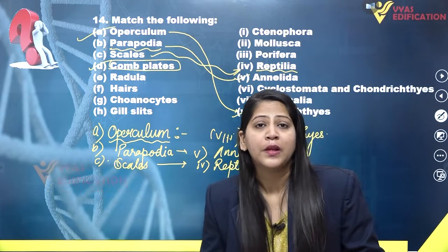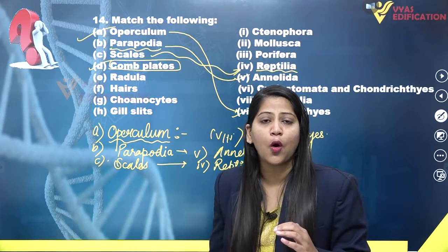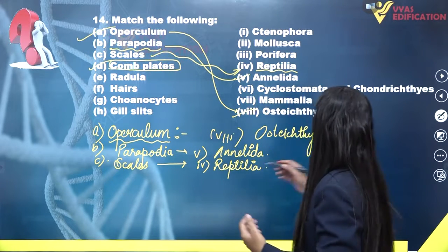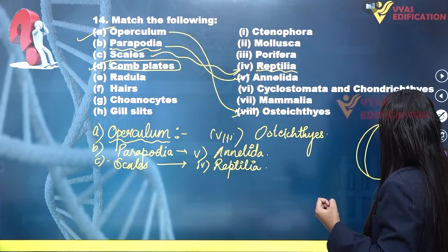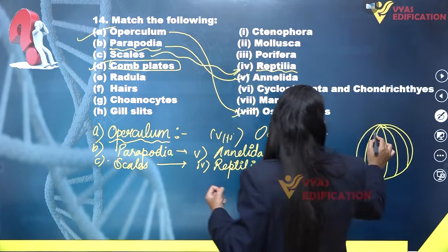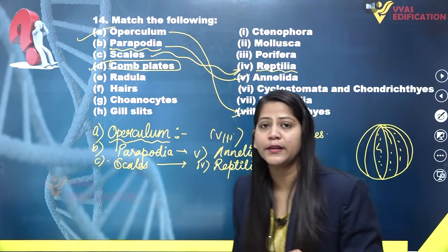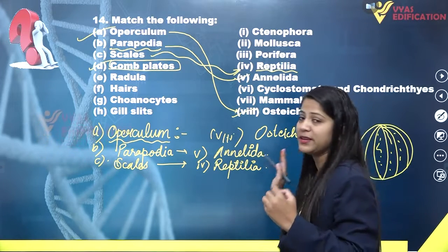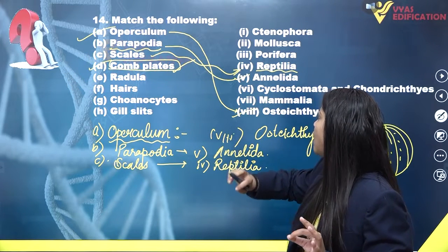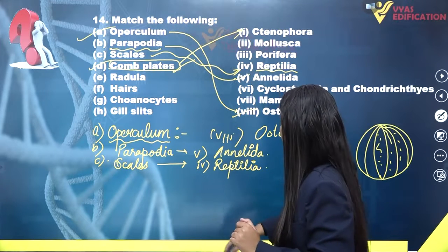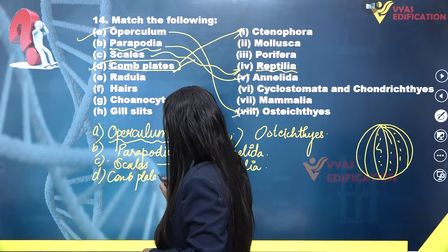Comb plates are found in the members of Ctenophora, which is the third phylum of the animal kingdom. The members of Ctenophora have eight rows of comb plates which are ciliated. As shown in the Pleurobrachia diagram in your NCERT, these eight rows of ciliated comb plates help in the locomotion of these members. So comb plates will match with Ctenophora.